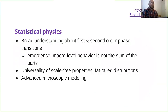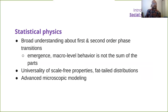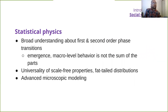Statistical physics provides a broader understanding about first and second-order phase transitions, emergence, and the idea that macro-level behavior is not the sum of the parts. There are also universal scale-free properties and tail distributions — this is a contested topic, but it seems that many normality assumptions have been diversified as we understand there are other distributions and their possibilities, along with advanced microscopic modeling.